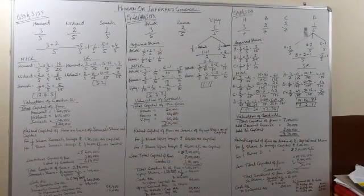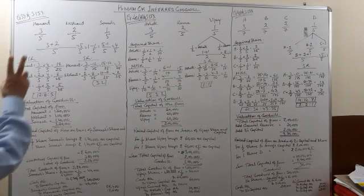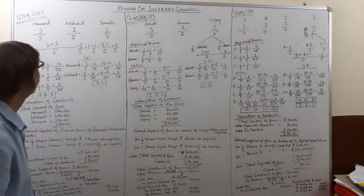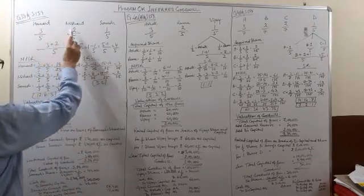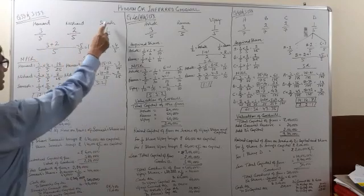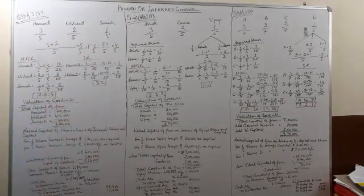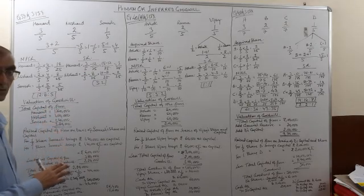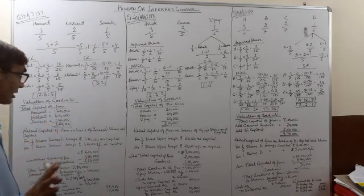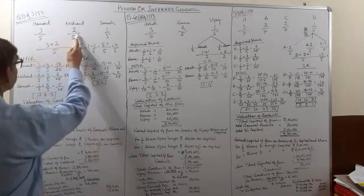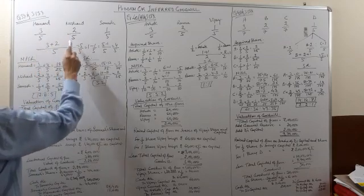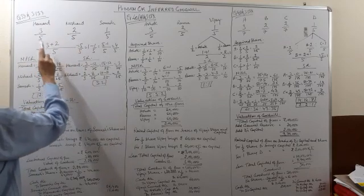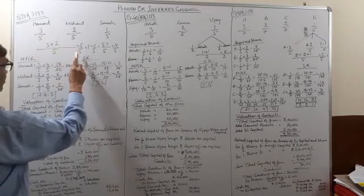In this question there are two partners: Hemant and Nishant. Their profit sharing ratio is 3:2, that is 3/5 and 2/5. Somesh is coming for a 1/5 share. We will add up the old partnership: 3/5 + 2/5 = 5/5 = 1.